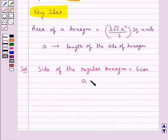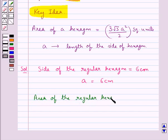That is, we have a is equal to 6 cm. So now the area of the regular hexagon is equal to 3 root 3 a square upon 2 cm square.